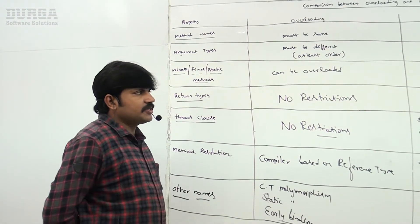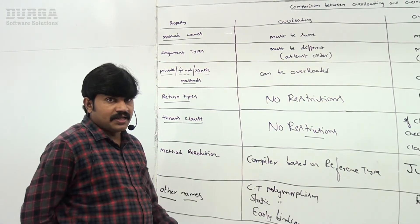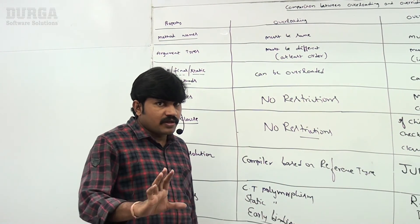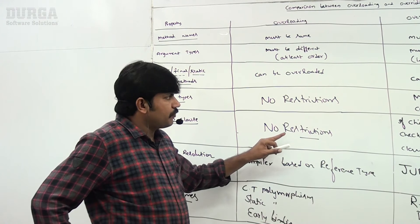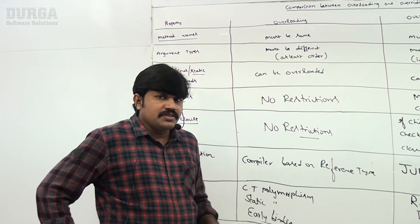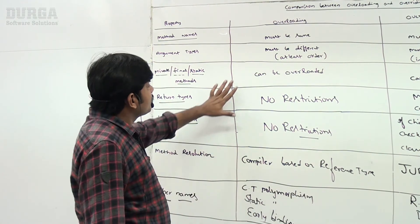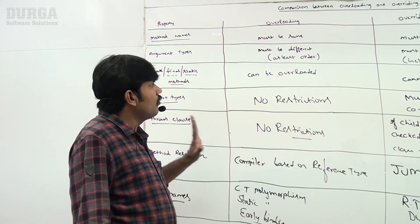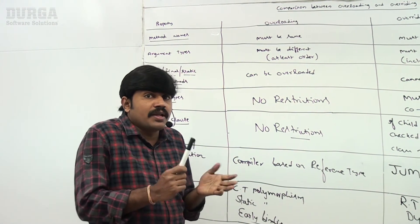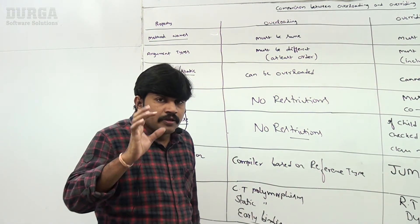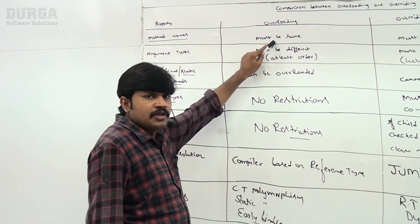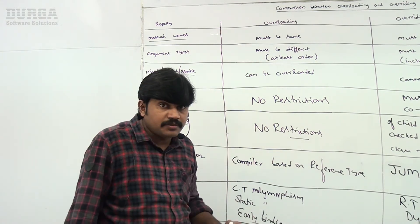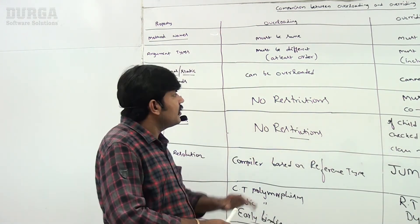If anyone asks about the difference between overloading and overriding, you can refer to this diagram confidently. One small observation: in overloading, only one rule needs to be checked — method names must be same and argument types must be different. Except that, nothing else needs to be worried about.